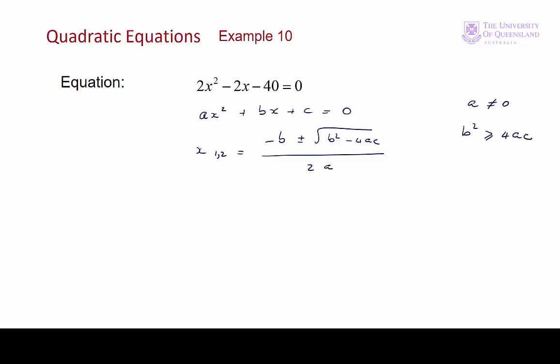For the equation we want to solve, we have a equals 2, b equals minus 2, and c equals minus 40. b squared equals minus 2 squared which is 4. 4ac equals 4 times 2 times minus 40, so that's minus 320.